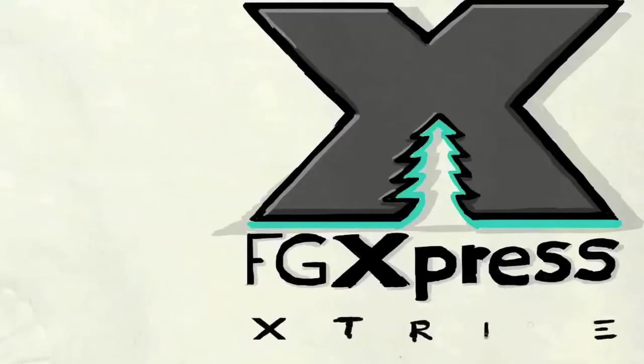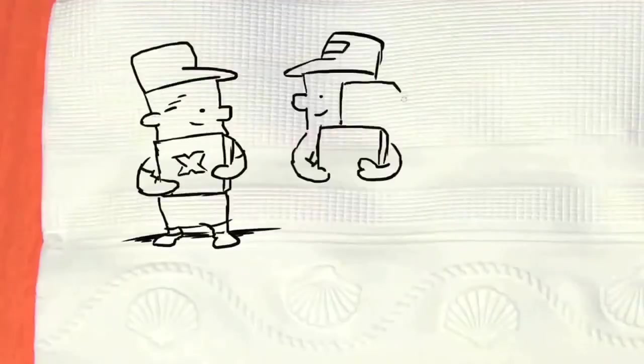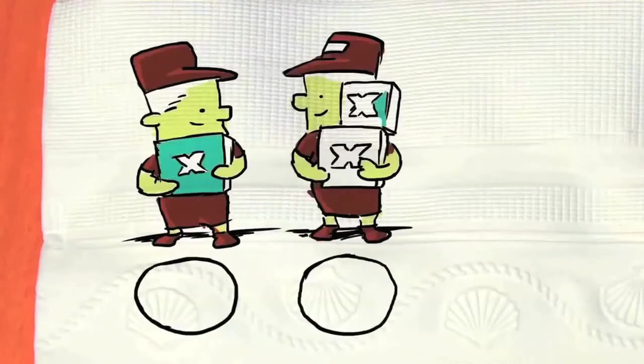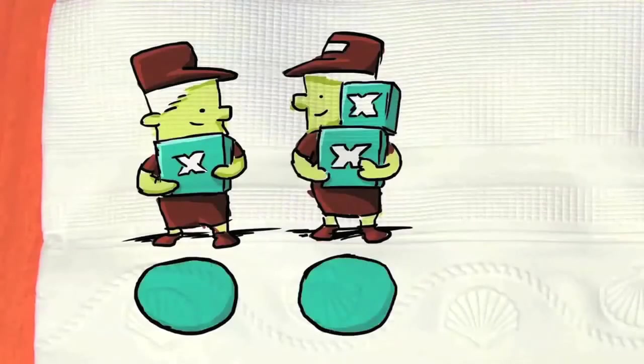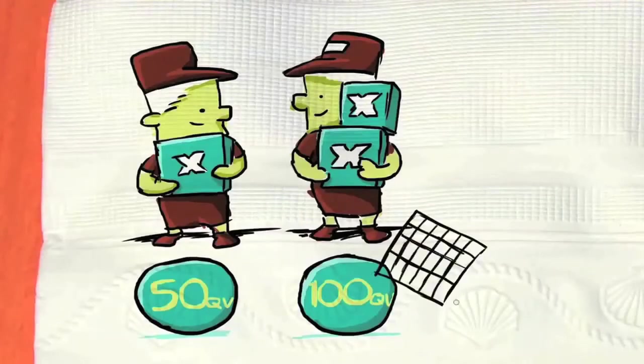There are only three requirements to create your X-Drive. First, start by purchasing your product so that you have an active order of 50 or 100 volume points. By the way, the volume points, or QV, for every order you purchase remains active for four weeks.